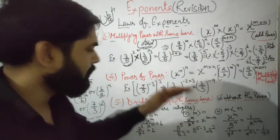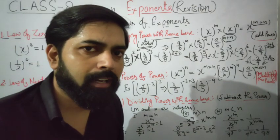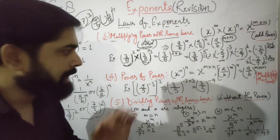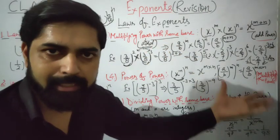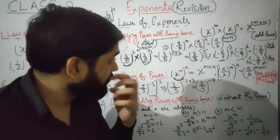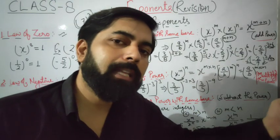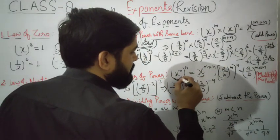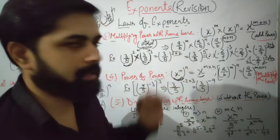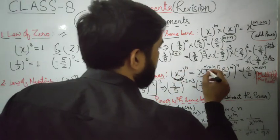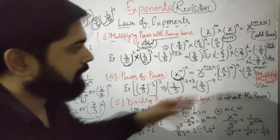Now the next law — the fourth law — is power of a power. Power of a power means when a number already has a power and that power itself has another power on top. In this condition, you multiply the powers. If you have one base with two layers of power, you multiply those powers together.